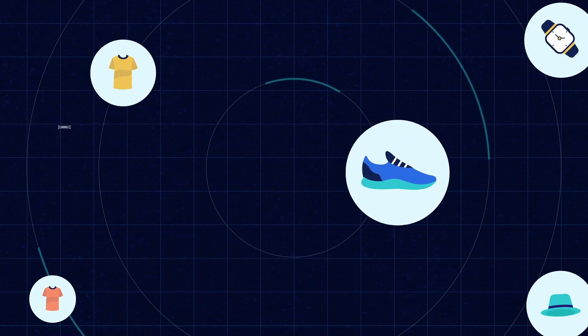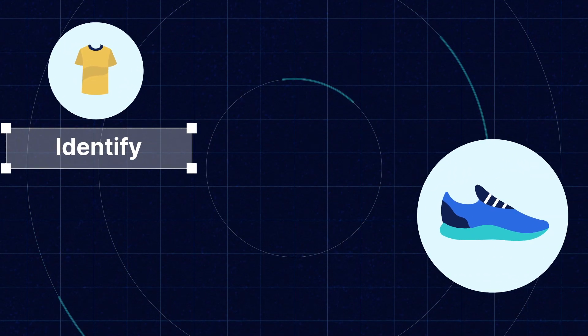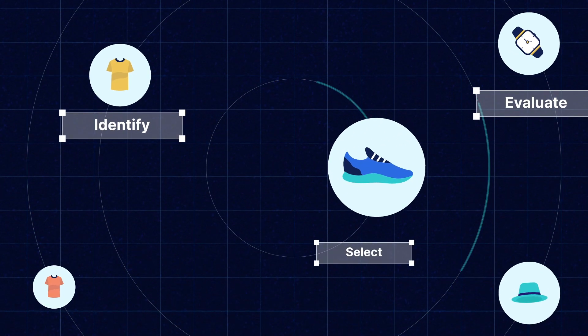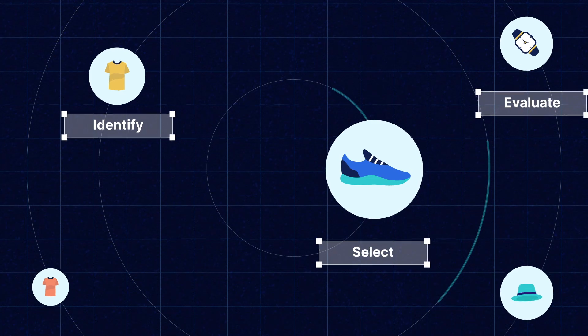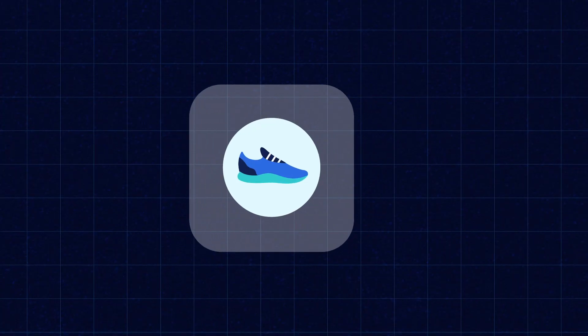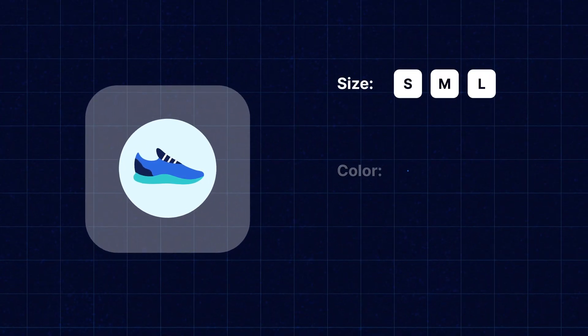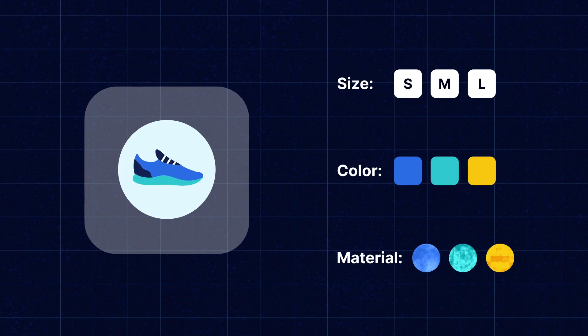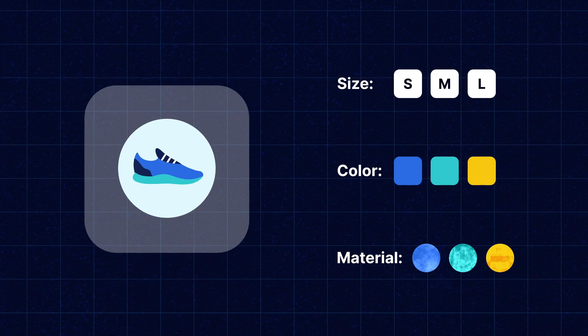In your online store, a customer can identify, evaluate, and eventually select the product they wish to purchase using the attributes that define a specific product. Determining a product's physical features such as size, color, and material is the most typical technique.